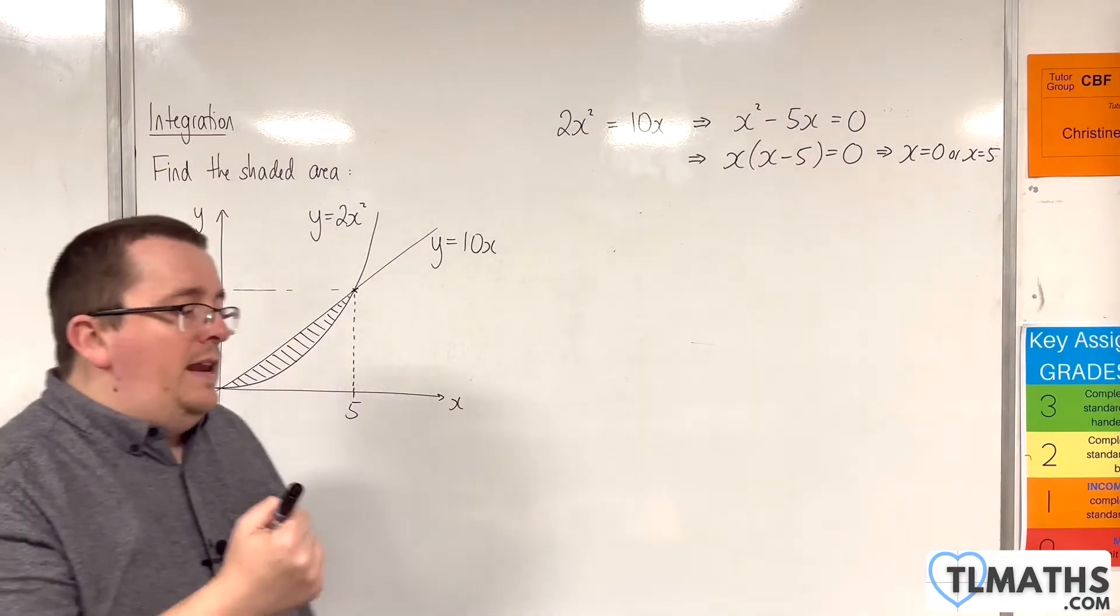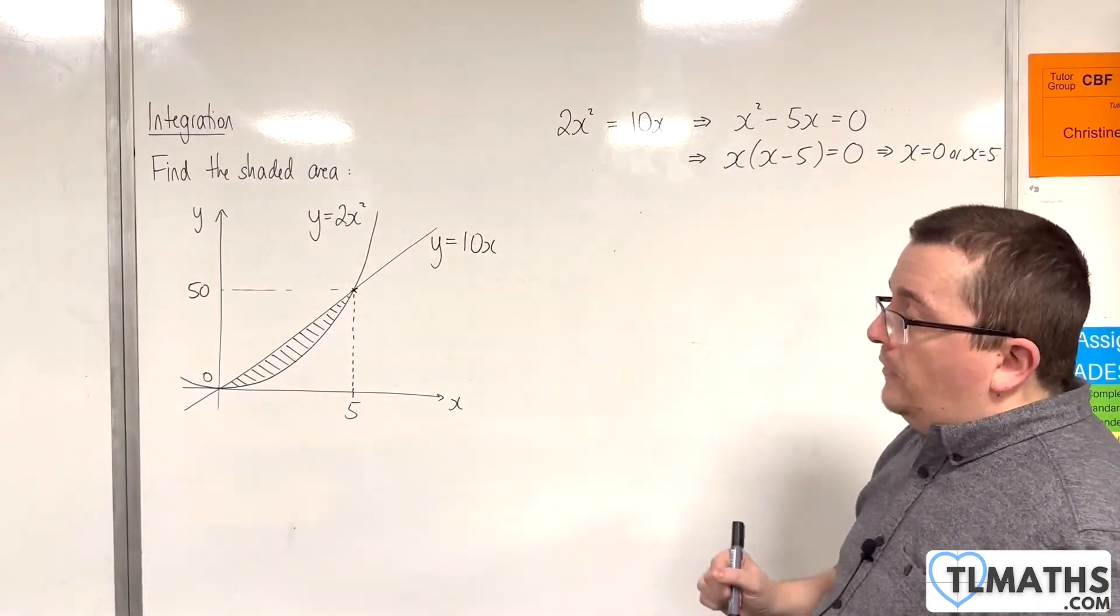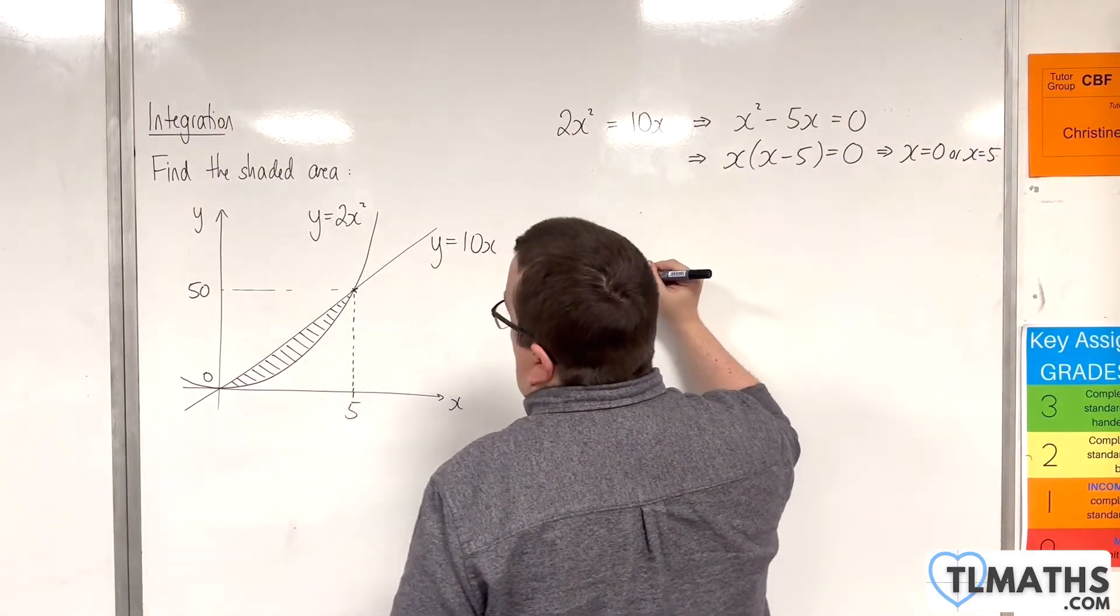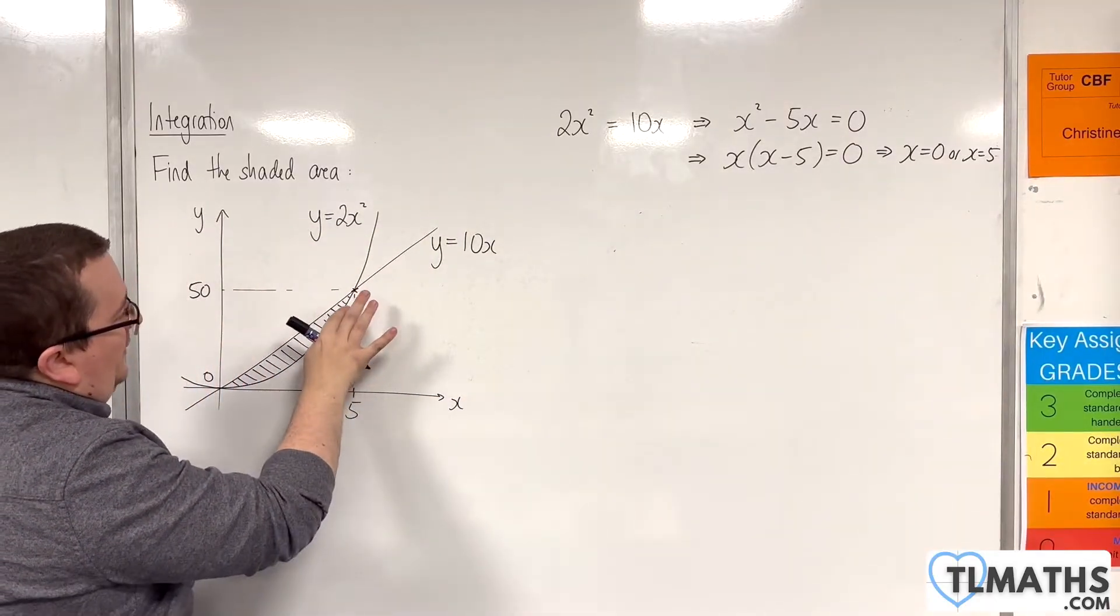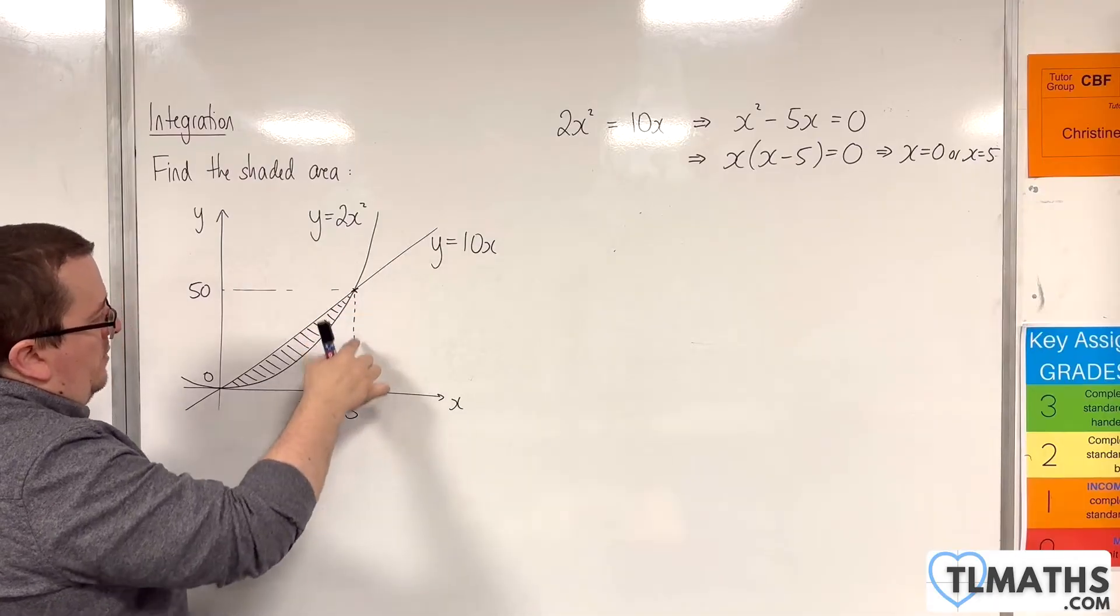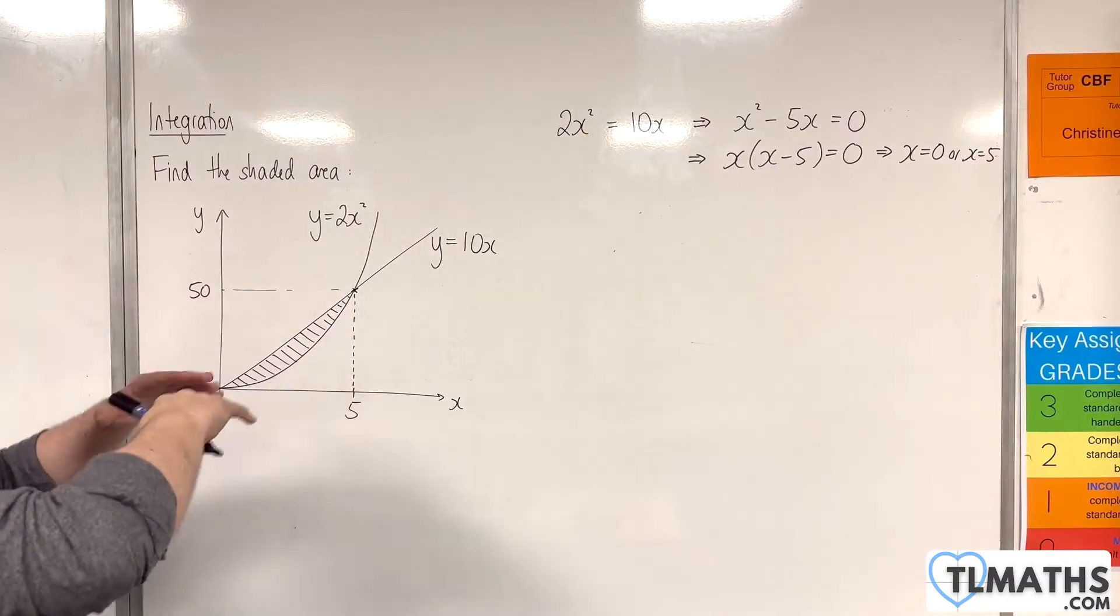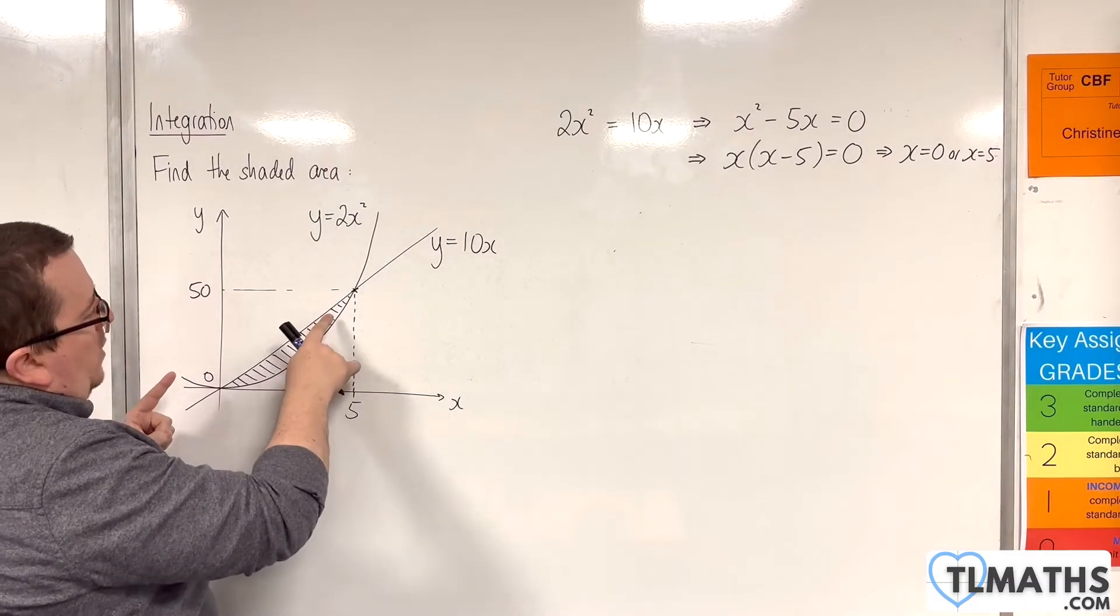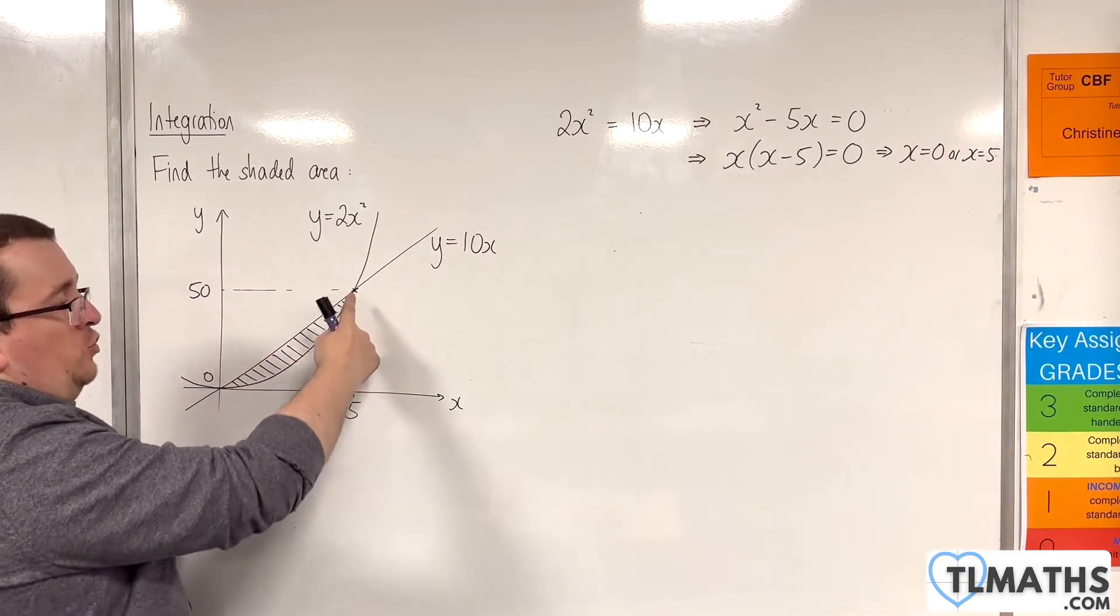So we know that integration allows me to find the area between the curve and the x-axis. So if I was to find the integral of 2x squared between 0 and 5, what that would do is it would give me all of this section. So this section here underneath the graph but between the x-axis, between the curve and the x-axis. Now what we need to do to work out the shaded area is subtract that away from the area of the triangle.